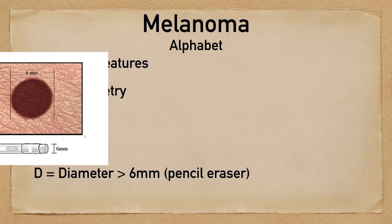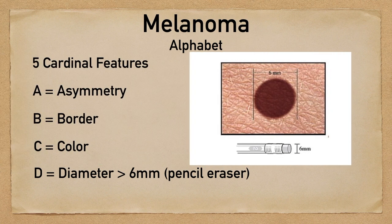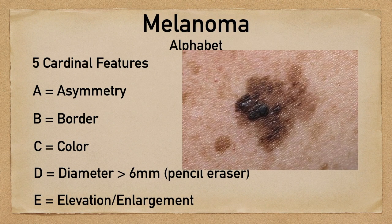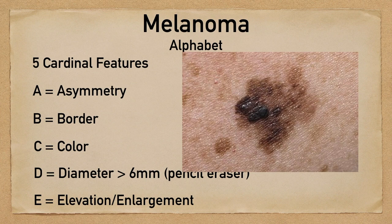D stands for diameter. The number to remember here is greater than six millimeters, which is about the size of a pencil eraser. Lesions that are larger than this can also be concerning. Finally, E stands for elevation or enlargement. Rather than having a lesion that's nice and flush with the skin, there's going to be some elevation involved, and this is a cardinal feature of melanoma.